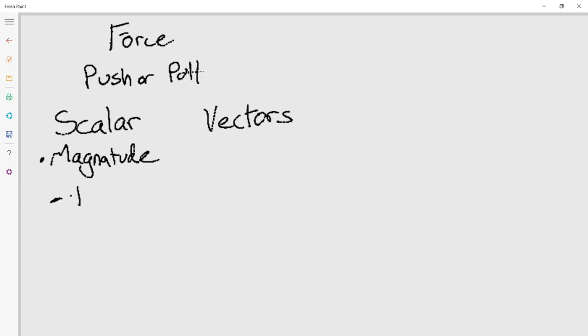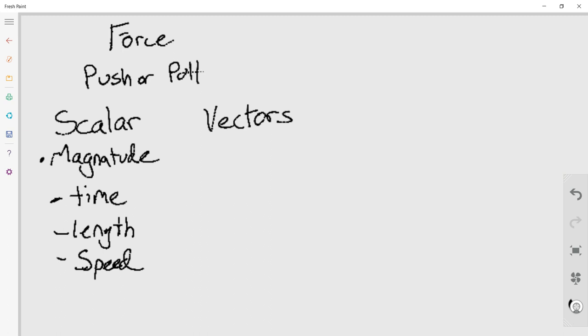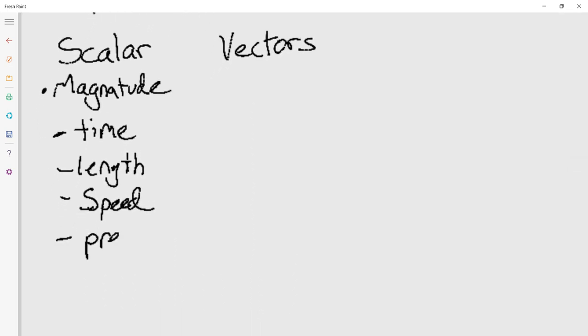Some examples are things like time. We can measure time, it increases, but it doesn't actually have a direction. Length, when we just measure length, it's not necessarily a direction, so we say that's scalar. Speed is also counted as scalar, as well as pressure and mass. Now there's other ones as well, but they're the main ones that we're going to think about.